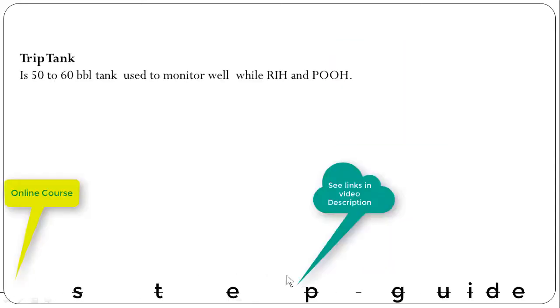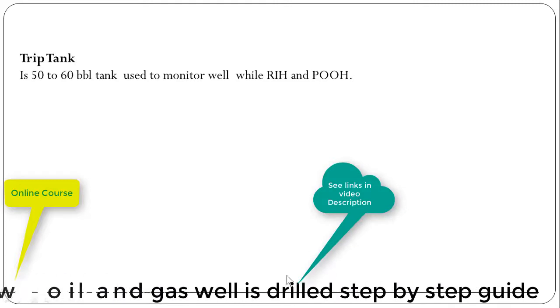Trip tank is a 50 to 60 barrel tank used to monitor the well while running in hole and pulling out of hole.